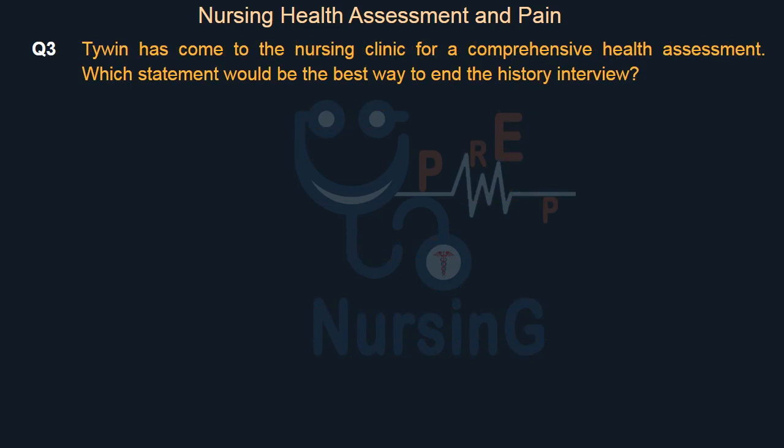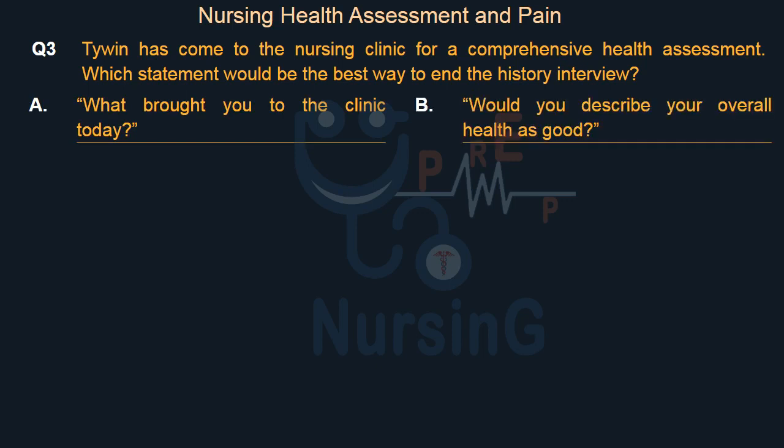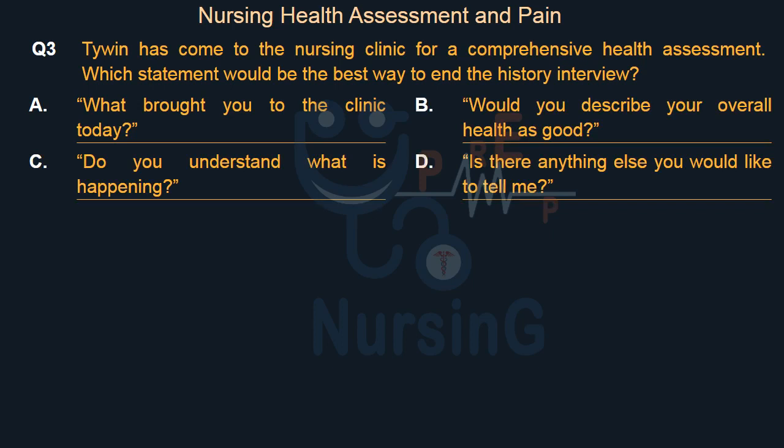Tywin has come to the nursing clinic for a comprehensive health assessment. Which statement would be the best way to end the history interview? Option A: What brought you to the clinic today? Option B: Would you describe your overall health as good? Option C: Do you understand what is happening? Option D: Is there anything else you would like to tell me?